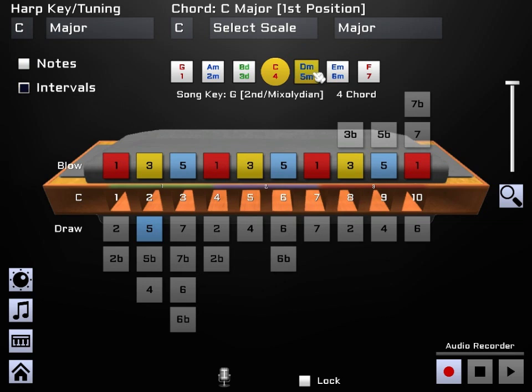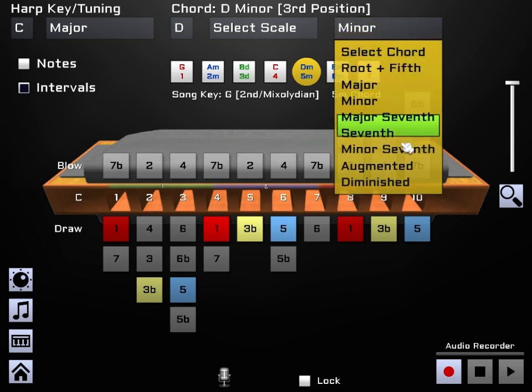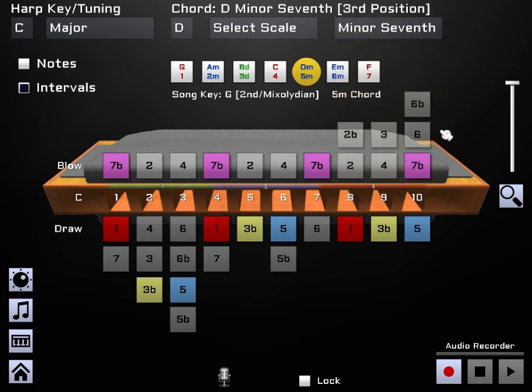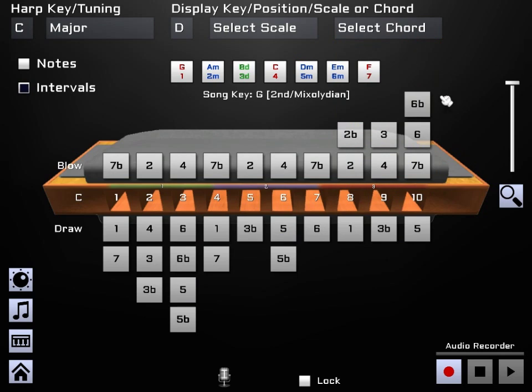Again, we want to look at D minor, the fifth. For playing in the song key of G, the fifth chord is a D minor, which is what's called third position on a C harmonica. And you can change the type of chord here if you want to see what was a minor seventh as well. You want to add in the flattened seventh, or maybe you just want to see what the root and the fifth are. And then to deselect it, you can just do that there.